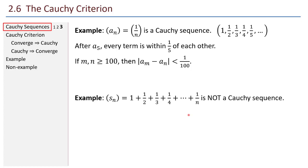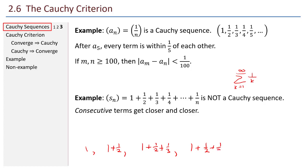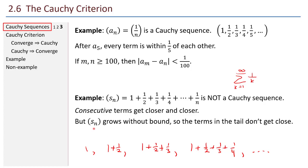Here's an example of a sequence that is not Cauchy, although it might look like it at first: the sequence of partial sums of the harmonic series. Consecutive terms get closer and closer — the first term is 1, then 1 plus 1/2 (difference of 1/2), then 1 plus 1/2 plus 1/3, and so on. However, this sequence of partial sums grows without bound because the harmonic series diverges, so the terms in the tail don't get close.